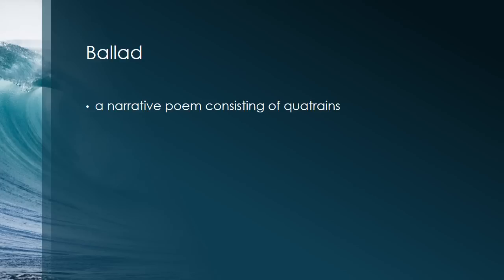First of all, it's important to know what a ballad is. A ballad is a narrative poem consisting of quatrains. By narrative, I mean that it tells a story. Quatrains means that it's in little chunks of text that are made up of four lines each — each stanza is made up of four lines.